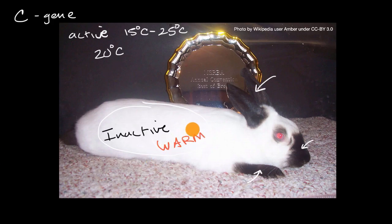And so over here, we're going to be greater than, let's say 35 degrees Celsius, where the enzyme that the C gene codes for is inactive. This is where it's optimally active. And above 35 degrees Celsius, it's actually not active at all.